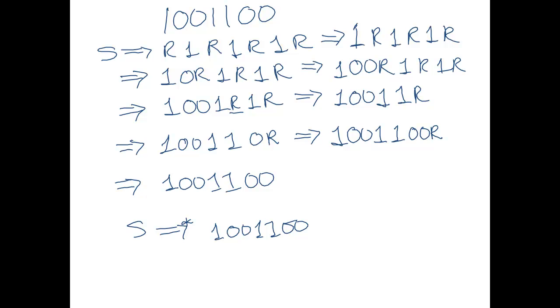Okay. And so, now we have that s yields 1, 0, 0, 1, 1, 0, 0. Using some number of rules from the grammar. Some number of steps in the derivation. So, we have the grammar generates the string that should be in the language.